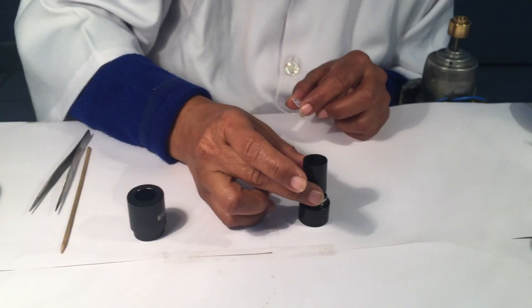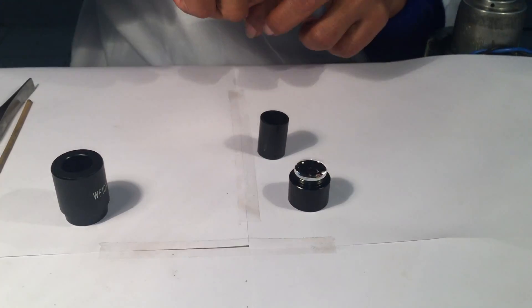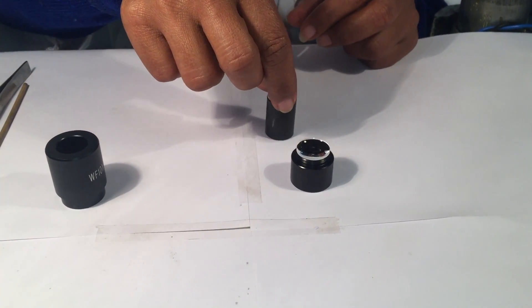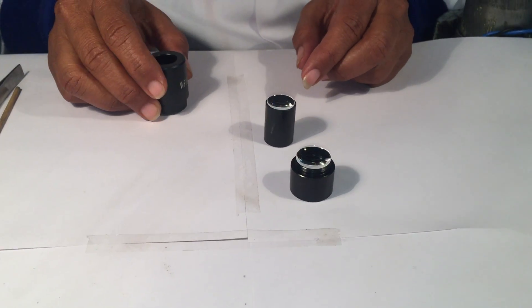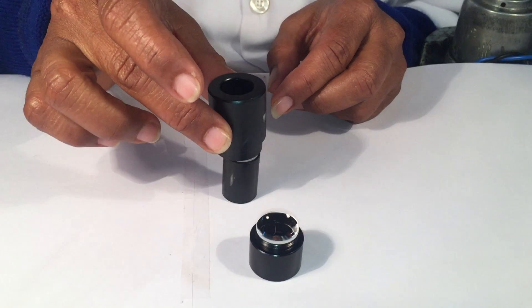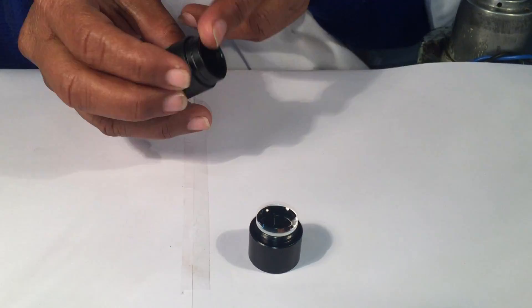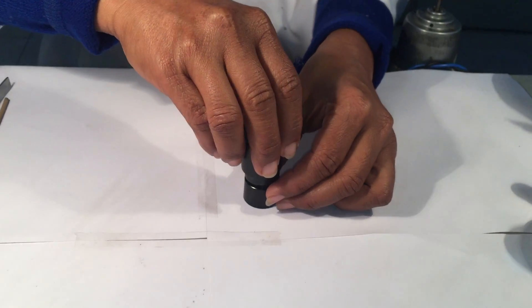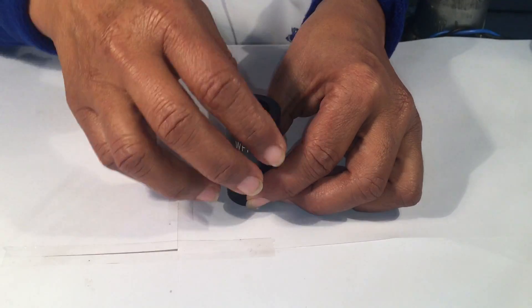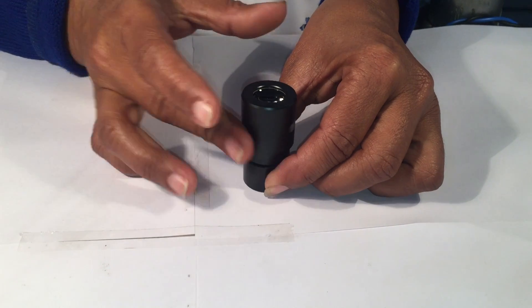Once all the parts are done, we take the eye lens, put the flat surface of the lens on the upper part of the spacer. We place the upper part properly. And then we will take all the parts together and screw them on the lower part.